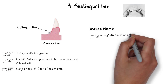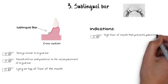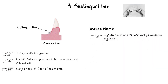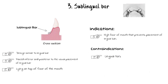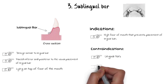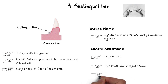The sublingual bar can be used instead of a lingual plate if the lingual frenum does not interfere. Its superior border should be placed at least 3 mm below the gingival margin. Contraindications include a present lingual tori, high attachment of the lingual frenum, or any severely tilted remaining natural anteriors.